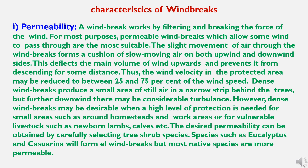Now to study the characteristics of windbreaks. The first is permeability. A windbreak works by filtering and breaking the force of the wind. For most purposes, permeable windbreaks, which allow some wind to pass through, are the most suitable. The slight movement of air through the windbreak forms a cushion of slow-moving air on both upwind and downwind sides, deflecting the main volume of wind upward and preventing it from descending. Thus wind velocity in the protected area may be reduced to between 25 and 75 percent of the wind speed.